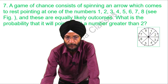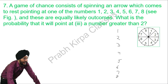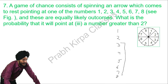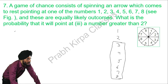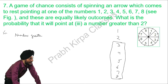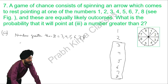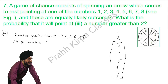Next part: what is the probability that it will point at a number greater than 2? The numbers greater than 2 from our set are 3, 4, 5, 6, 7, and 8. The total count of numbers greater than 2 is 6.